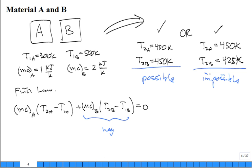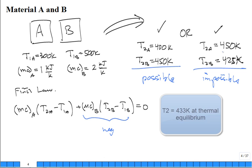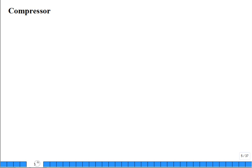So case two is impossible — not because it violated the first law, it didn't — but because heat flowed from the colder block to the hotter block without any external input. That's the key insight. Both cases satisfy energy conservation, but one is physically unrealizable. That's what the second law addresses. That particular example is easy to see intuitively. Now let's look at a more subtle case: a compressor.